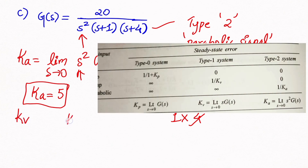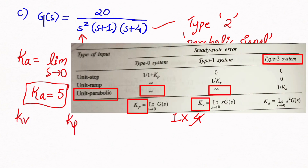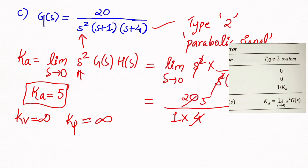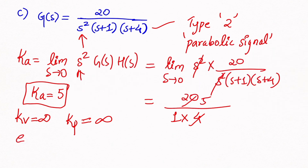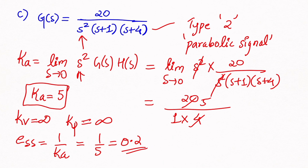For a Type 2 system, Kv = ∞ and Kp = ∞. The steady state error for the parabolic signal is ESS = 1/Ka = 1/5 = 0.2. This is how we solve these problems.